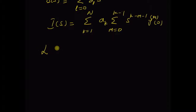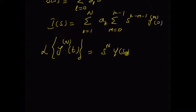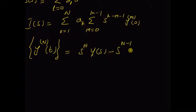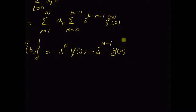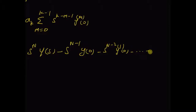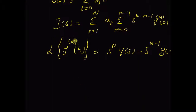For the first one, the Laplace transform of the nth derivative is by definition equal to s^n Y(s) plus minus s^(n minus 1) and the initial value of the output y(0), then minus s^(n minus 2) times the initial value of the first derivative, and so on. The last term is the initial value of the n minus 1 derivative. So this is the Laplace transform of the nth derivative.